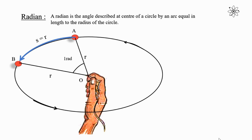So from this, we can say 1 radian is equal to R. As 1 radian is related with the radius, hence the name is radian.